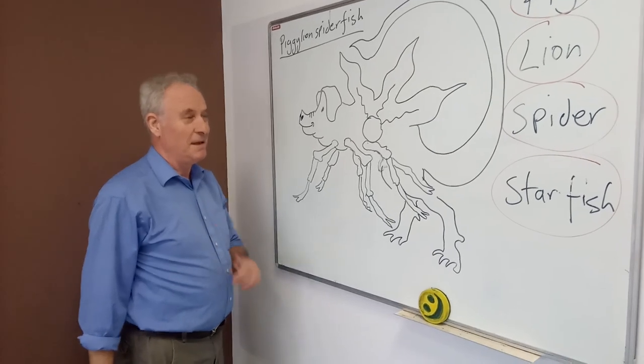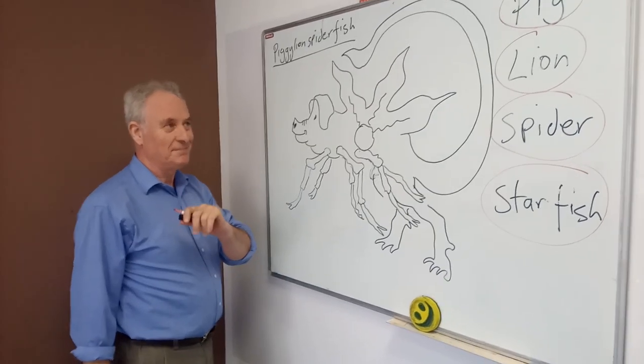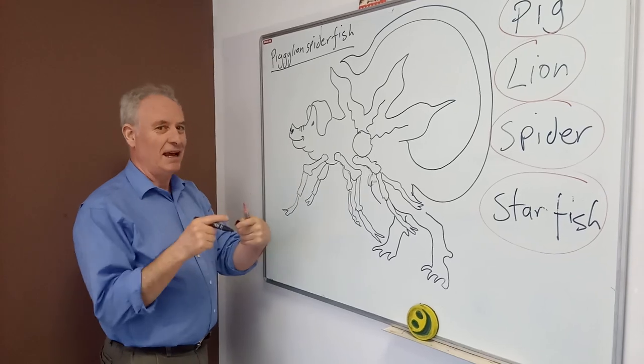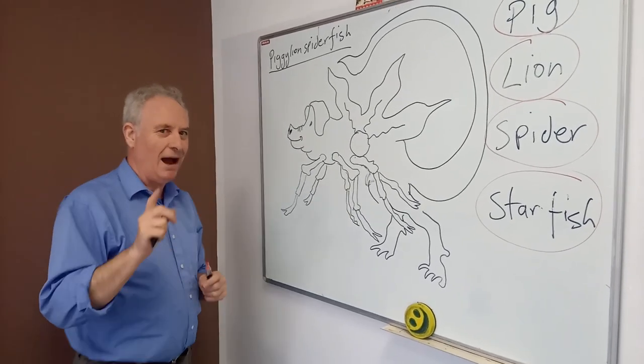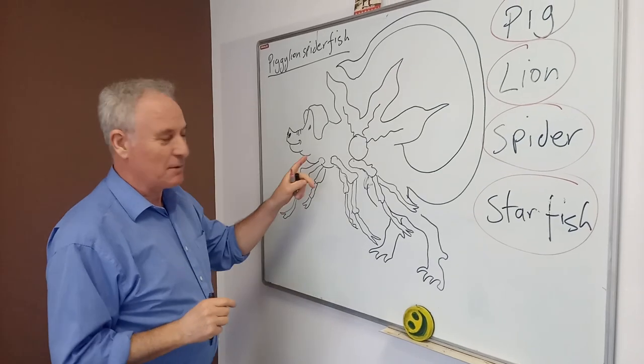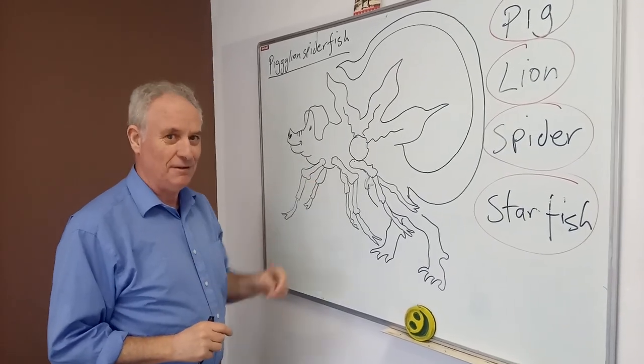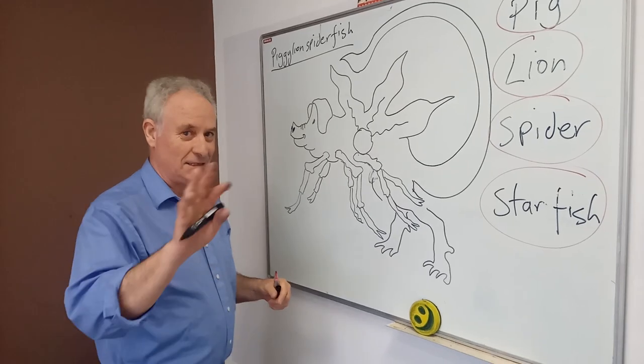Wanna have a go? Pick your animals. Decide how they go together. And pick bits from each one. Now, we're going to pause again, because I'm going to colour this. And when you come back, you'll see the finished thing. Okay? See you later.